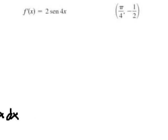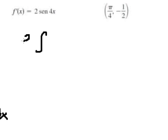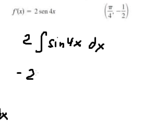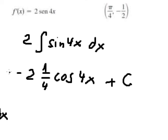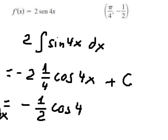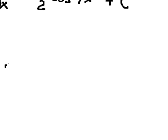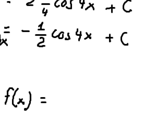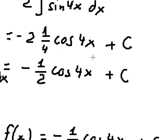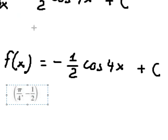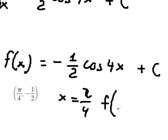Now let's go to the last one. The integration of sin(4x) gives us negative 1 over 4 times sin(4x), and I will put C. So this one, we have negative 1 over 2 cosine(4x) plus C. Now we have the function equal to this. We have the condition: when x equals π over 4, f of π over 4 equals negative 1 over 2.